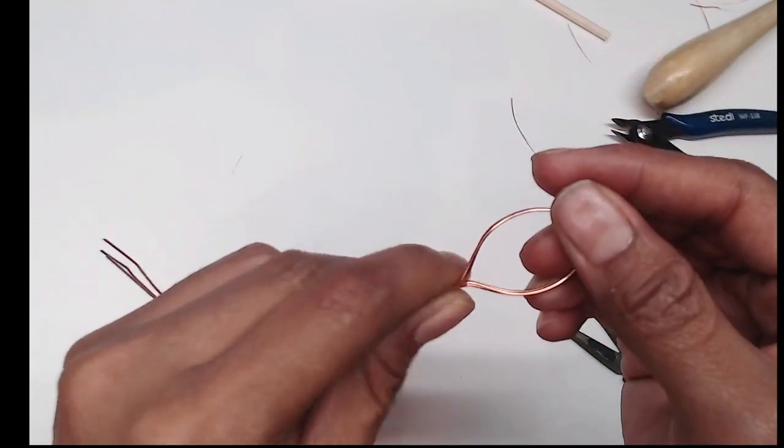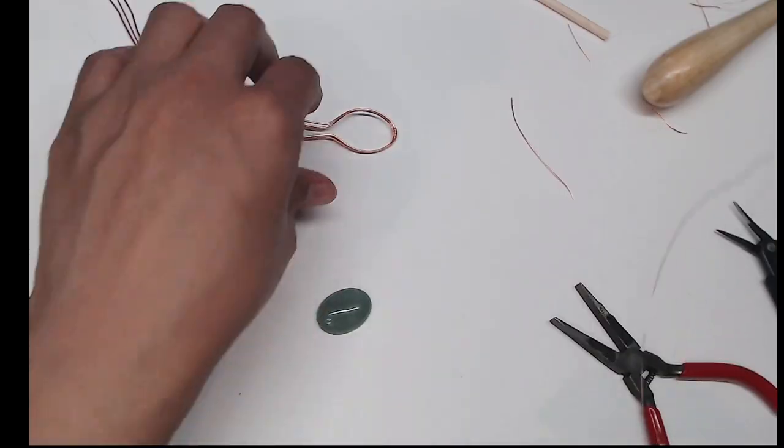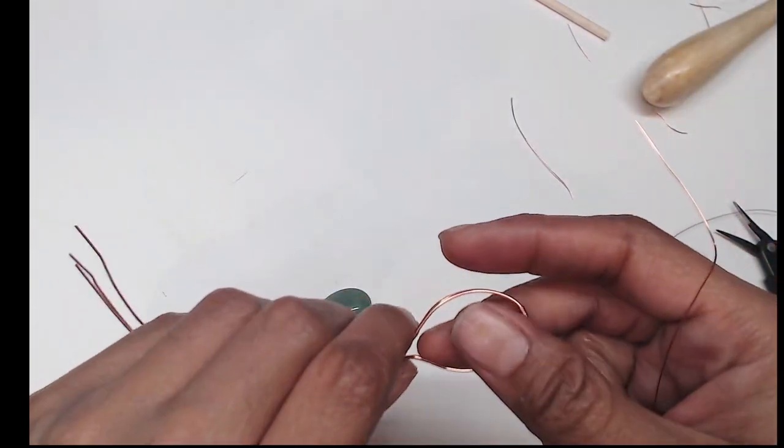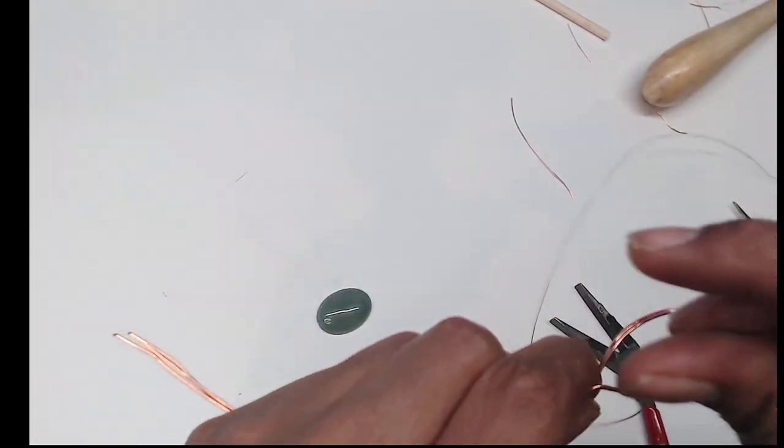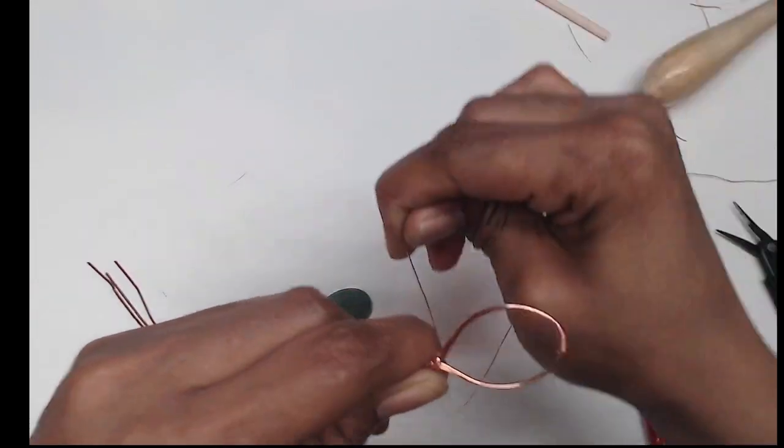Once that's complete you can grab your 26 gauge wire that is two feet long. Carefully bring your wires together, bring the shorter tip and use the shorter tip to wrap downwards.